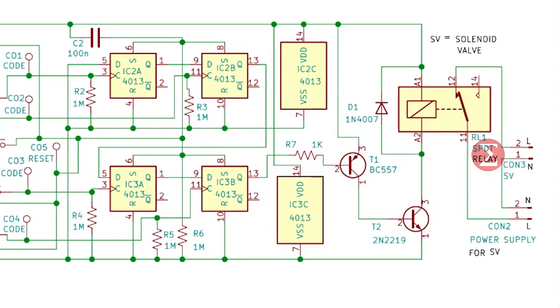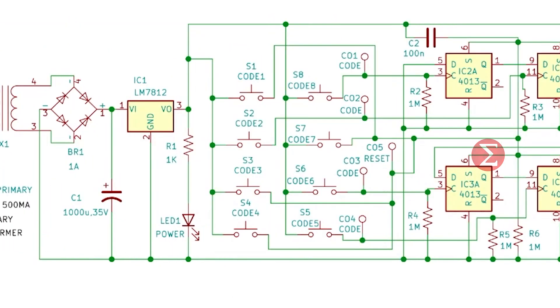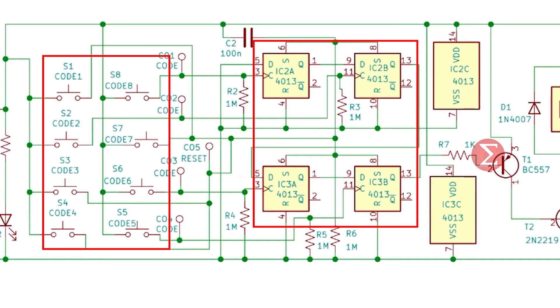We have set code as 8265. From this circuit, you can see we have connected clock of first D flip-flop that is IC2A to switch 8, IC2B clock to switch 2, IC3A clock to switch 6 and IC3B clock to switch 5. You can set any code of your choice by connecting the specific switches to D flip-flops.